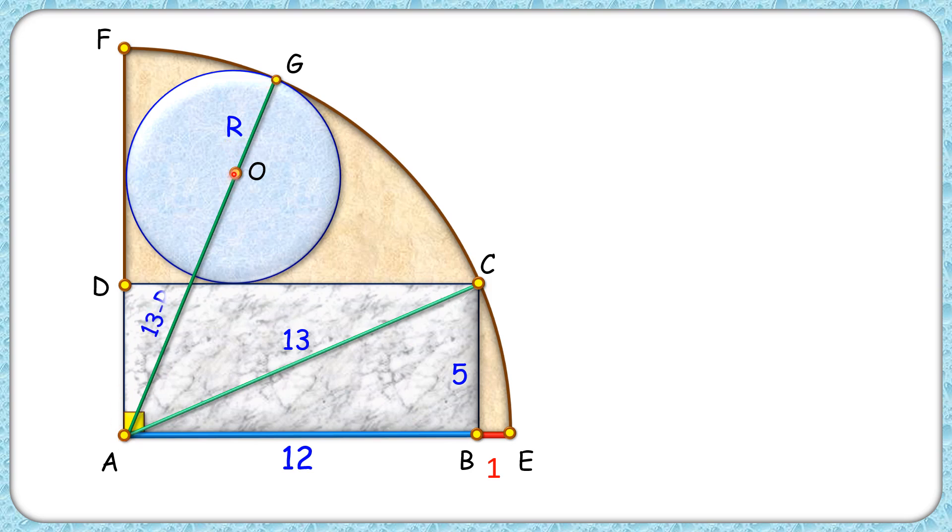So the length AO is 13 minus R. From point O, let's drop a perpendicular on AE. Now if you'll see, this length here is R cm, and from this point till point H it is the width of the rectangle, that's 5 cm, and thus OH is 5 plus R cm.